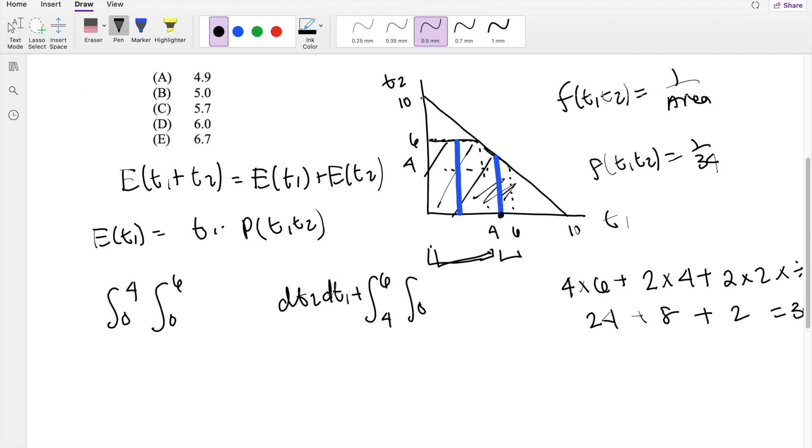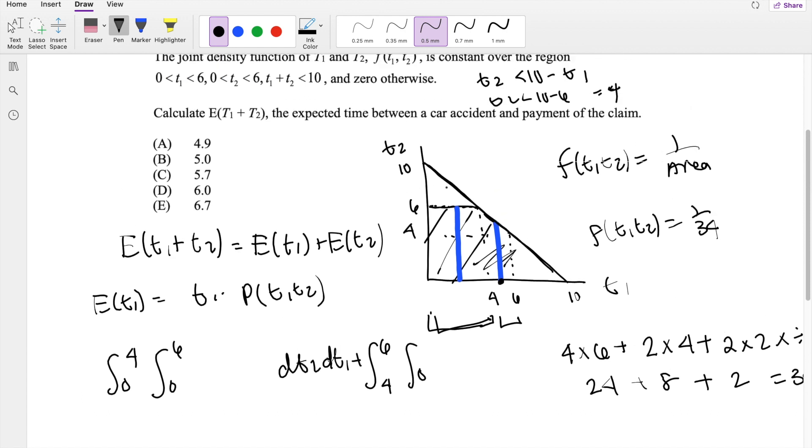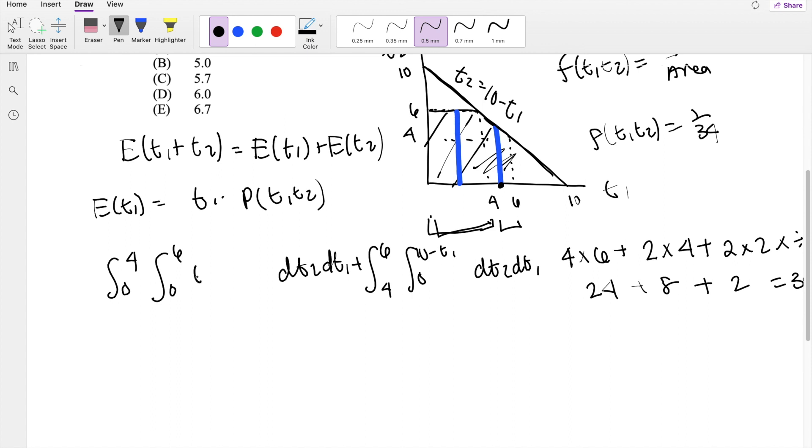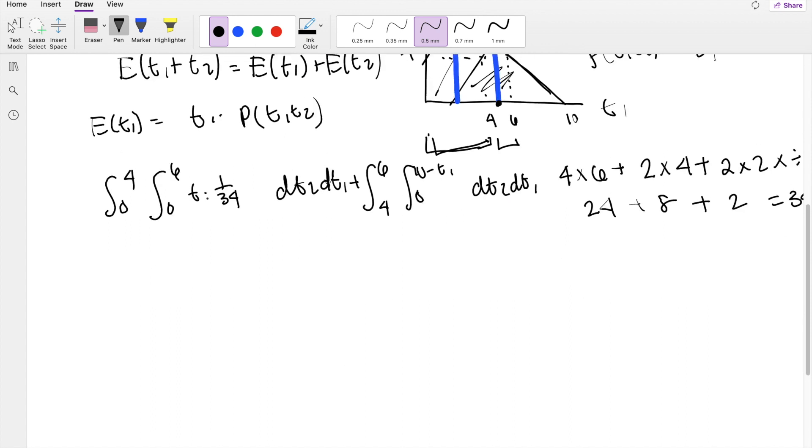t2 is equal to 10 minus t1. So if we're integrating dt2, dt1, this is the line we want, 10 minus t1. And the function is given right here, so that's t times 1 over 34. Oh, this is t1 by the way.